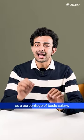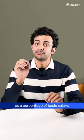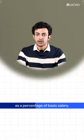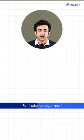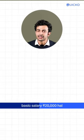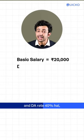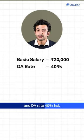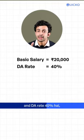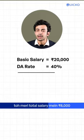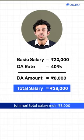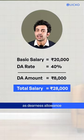It is calculated as a percentage of basic salary. For instance, if my basic salary is 20,000 rupees and the DA rate is 40%, then my DA will be 8,000 rupees.